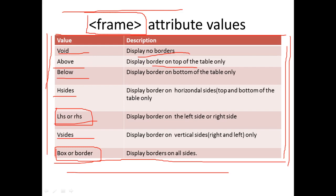The frame attribute values in order are: void for no borders, above, and others. Borders can be set using the frame attribute with these 5 attribute values.